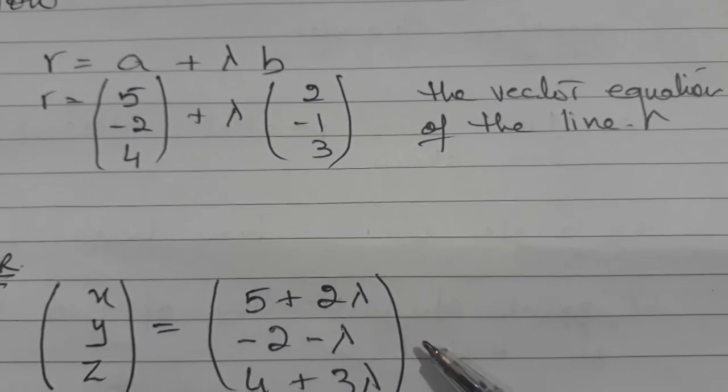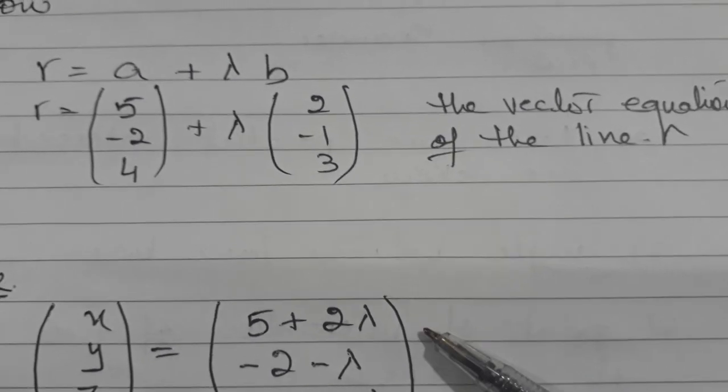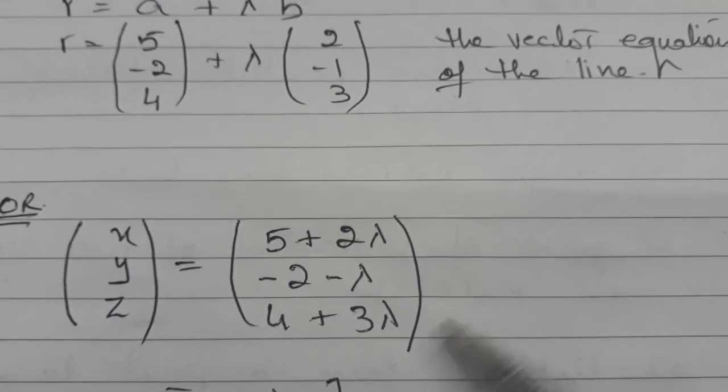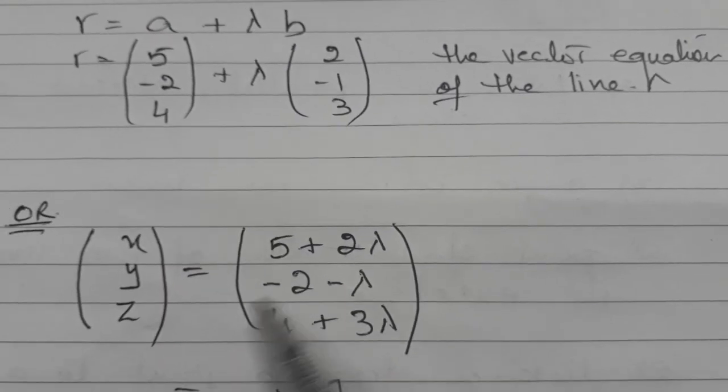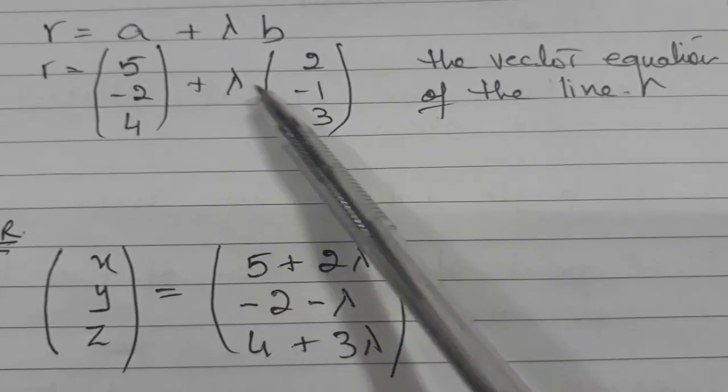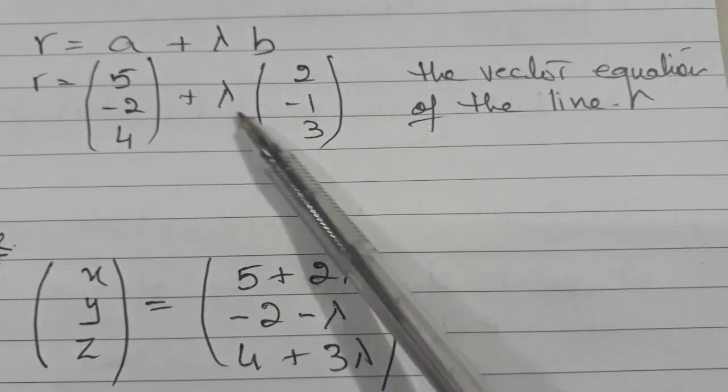Now second question. Let's see the other forms of the vector equation of the line also. Now the same line, if it is written in this form, you can see what is done. 5 plus 2 lambda. Simple multiplication with the lambda.